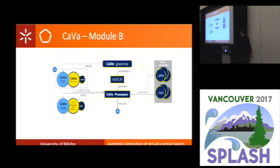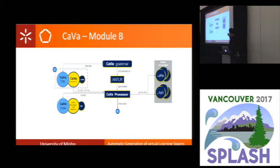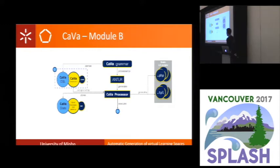Here we have a schema for Module B in detail. We have a CAVA processor — the same as CAVA Gen — that recognizes a CAVA specification file and stores the used concepts and relations from that specification. We call this the CAVA state file. Then, the CAVA processor generates the static LS scripts — like PHP files or template files such as views.